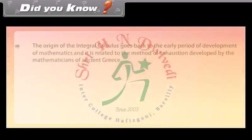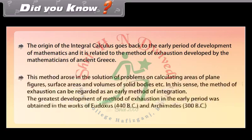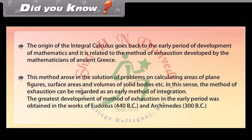Did you know? The origin of integral calculus goes back to the early period of development of mathematics and is related to the method of exhaustion developed by mathematicians of ancient Greece. This method arose in the solution of problems on calculating areas of plane figures, surface areas, and volumes of solid bodies. The method of exhaustion can be regarded as an early method of integration. Its greatest development was obtained in the works of Eudoxus (440 BC) and Archimedes (300 BC).